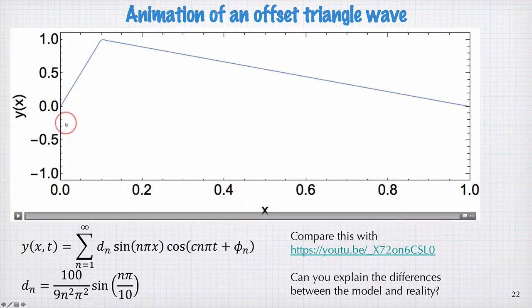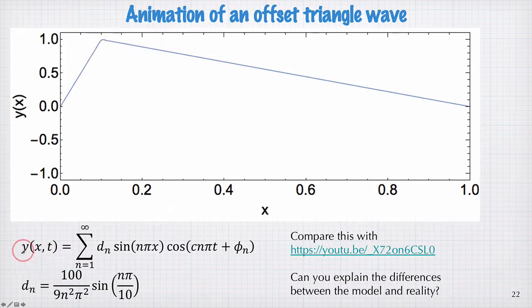This is a model of a similar situation, where instead of plucking the string by pulling it up in the centre, I've pulled it up to one side. In this case, the sum of the modes is given by this, where the d_n is given by this equation here. The φ_n in this case actually is equal to zero.